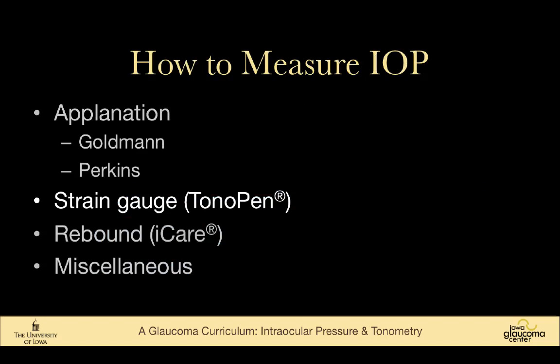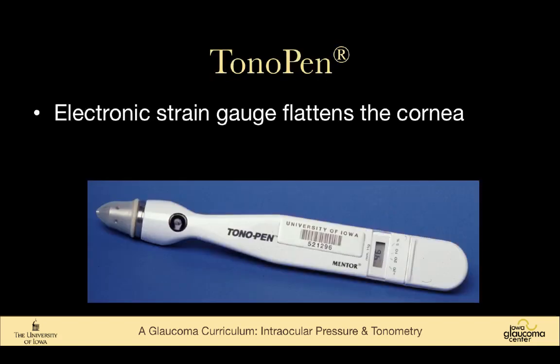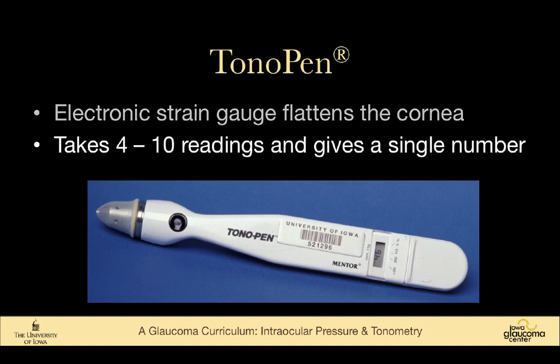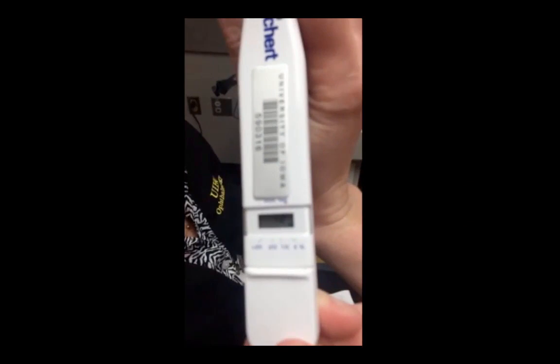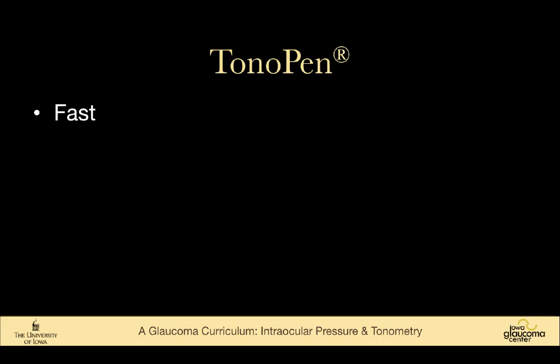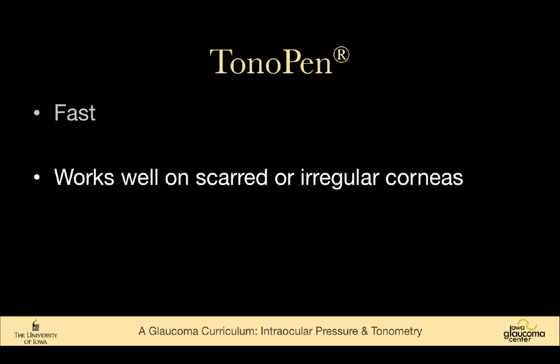The strain gauge, or tono pen, uses an electronic strain gauge to flatten the cornea. It takes four to ten readings and yields a single number. There's a very fine chirping as results are taken. Tono pen has the advantage of being very fast, works well on scarred or irregular corneas, and is often the tonometer of choice in a cornea clinic. In our department, the retina clinic also uses it because it's fast, easily cleaned, and the tips are easily disposed of.